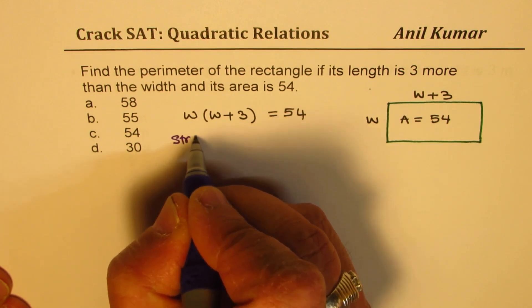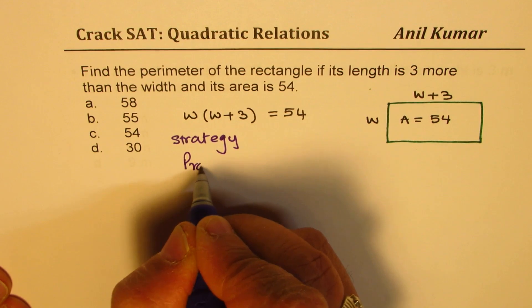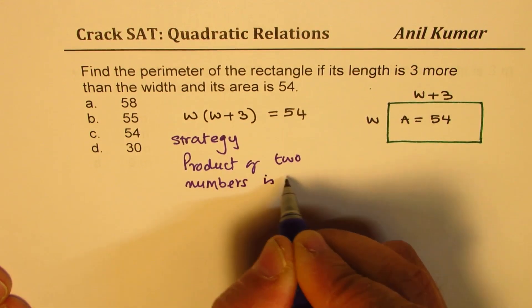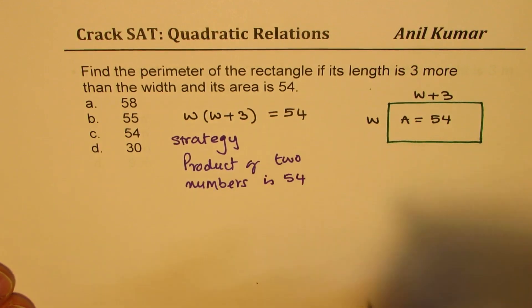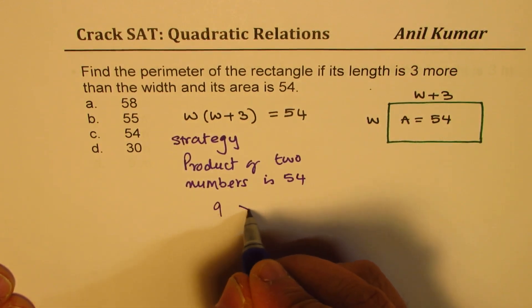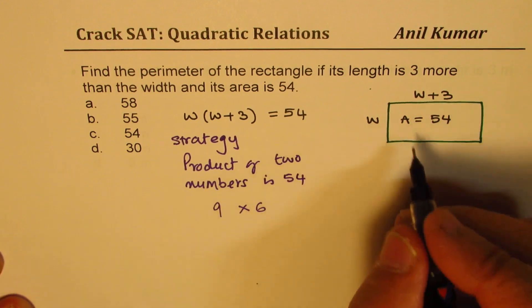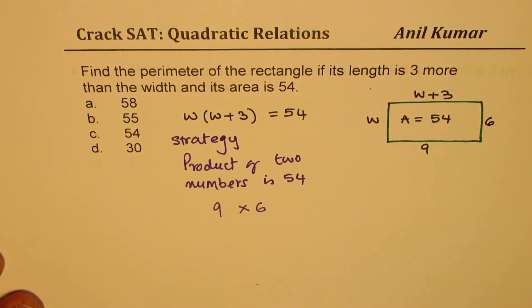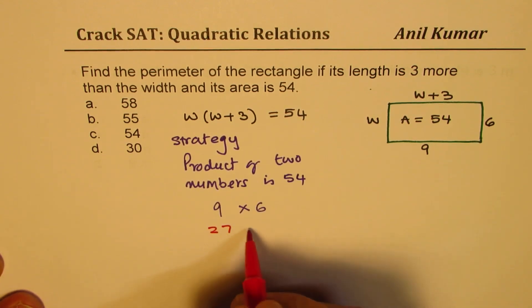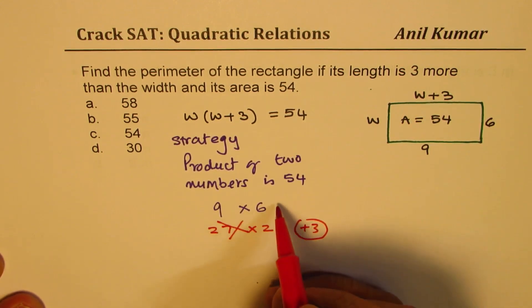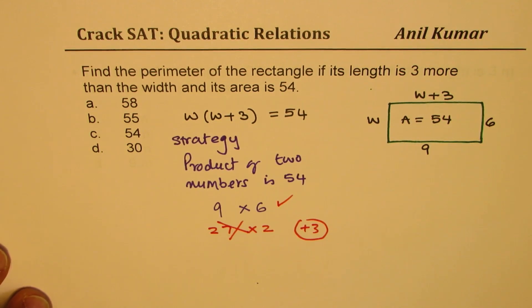So the key to understand here is we are looking for two numbers. So the strategy is: product of two numbers is 54. So what comes to your mind? If you look into the numbers, 9 times 6 - you know 9 times 6 is 54 - that becomes the right choice since one of these numbers is 3 more than the other. So straight away you get your answer as length should be 9 and this side should be 6. Of course there are other solutions, for example 27 times 2 is also 54. However, here we do not have plus 3 ratio, so this is not correct, but this is correct for us.